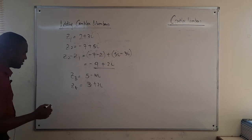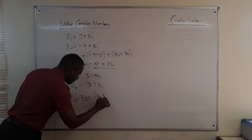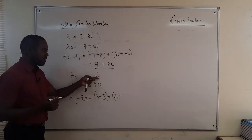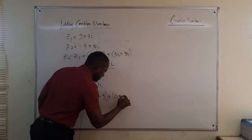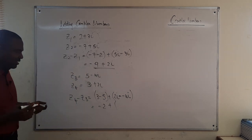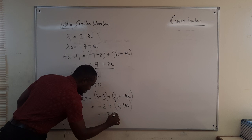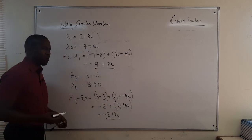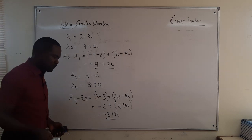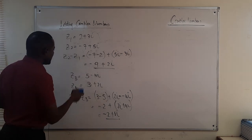For z4 minus z3, where z3 equals 5 minus 4i and z4 equals 3 plus 2i: real parts give 3 minus 5 equals minus 2. For the imaginary parts, 2i minus minus 4i — the two minus signs multiply to give plus — so 2i plus 4i equals 6i. Therefore z4 minus z3 equals minus 2 plus 6i. Subtracting complex numbers simply means subtracting the real parts and subtracting the imaginary parts.